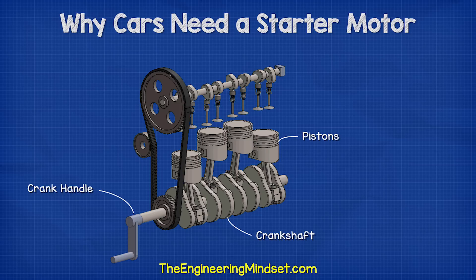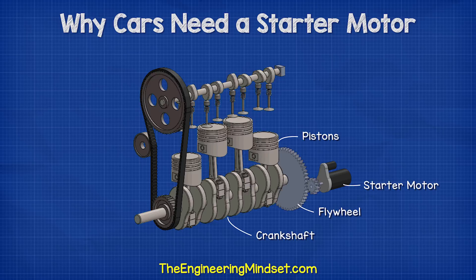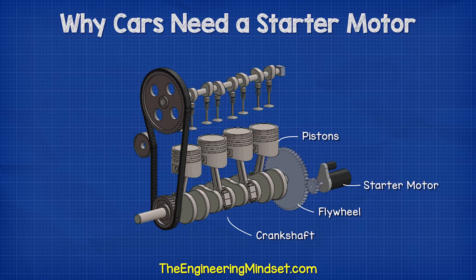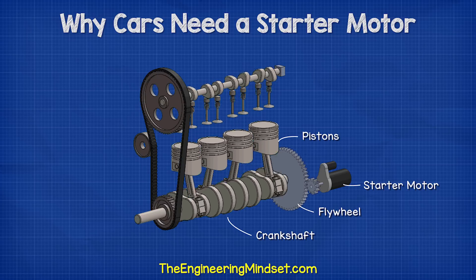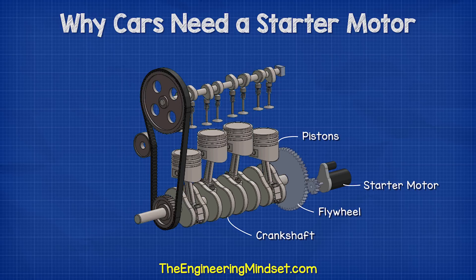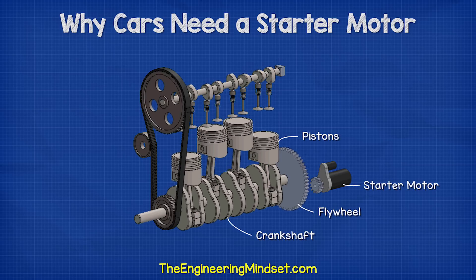On modern engines, we find a flywheel connected at the rear, which has a number of teeth around its perimeter. The starter motor is placed in close proximity to this, and when we start the car, it temporarily connects to the flywheel and forces it to rotate. This turns the crankshaft, which moves the pistons and starts the combustion process. The starter motor then disconnects from the flywheel and the engine continues to run.